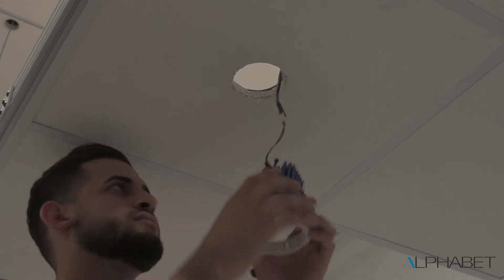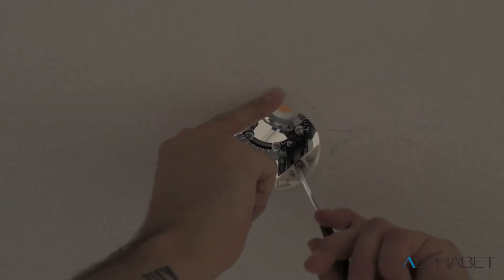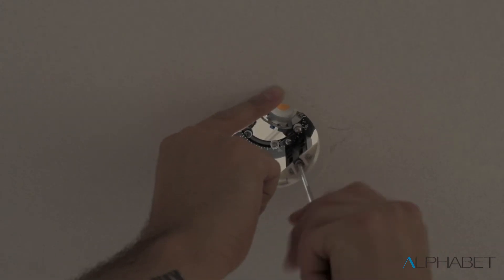Simply connect the fixture to power and slide it into the ceiling. Using a Phillips head screwdriver, engage the wings.